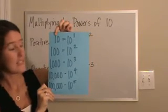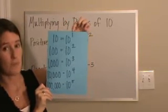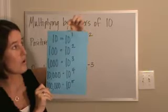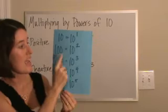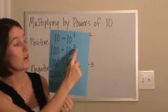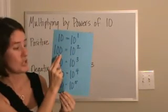But 10 is the same thing as 10 to the first power. Exponent is 1. We have one zero. 100 is the same thing as 10 to the second power. Exponent is 2. Two zeros.